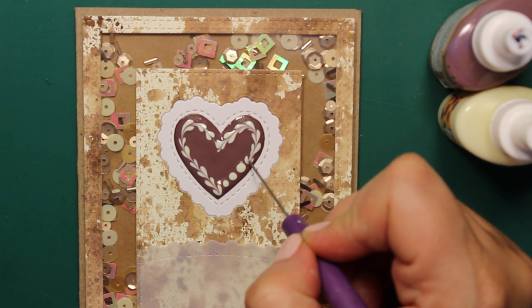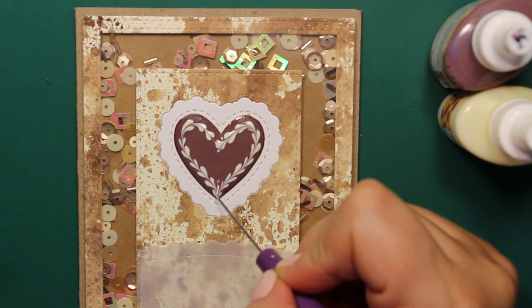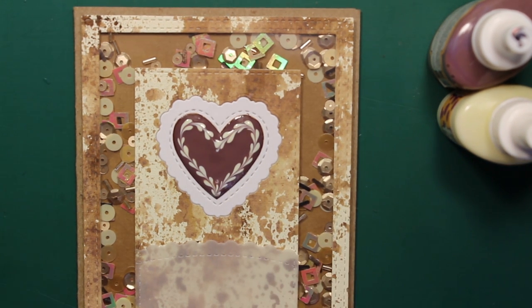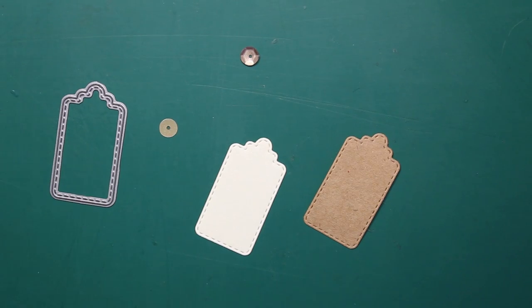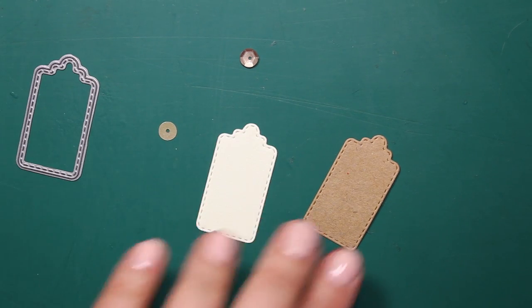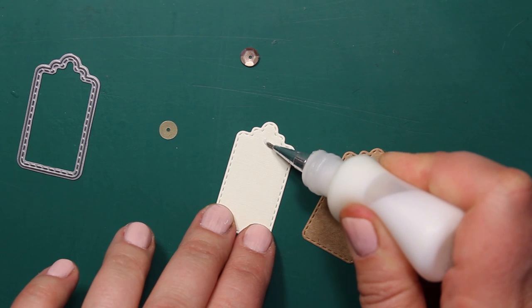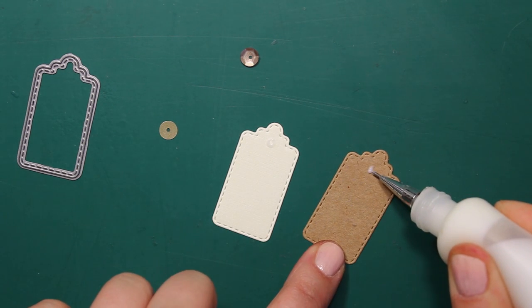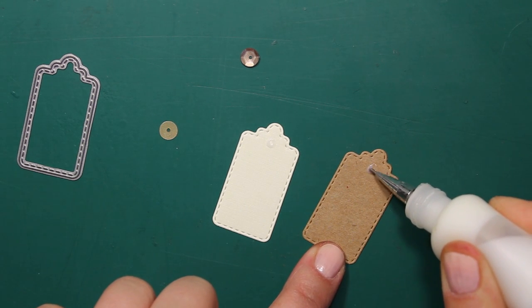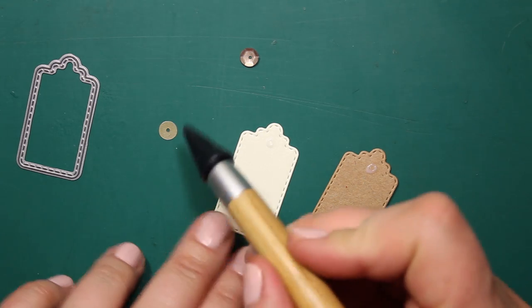Then I'll set it aside to dry overnight. I have also die cut two small stitched tags but instead of punching holes I will be attaching two sequins from the set I used to fill in the shaker.